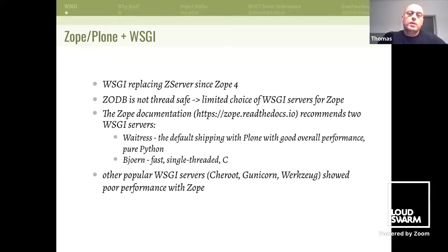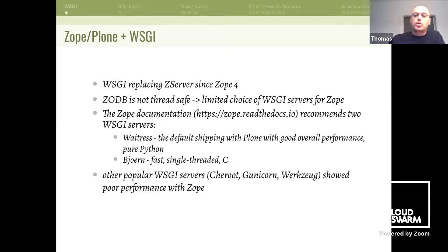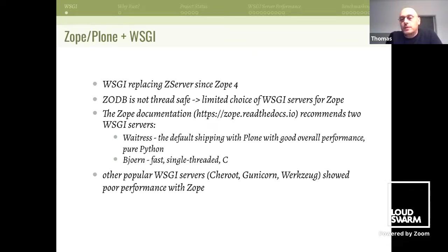Since the ZODB is not thread-safe, it turned out that there is actually a very limited choice of WSGI servers that can be used with Zope. The Zope documentation actually recommends only two WSGI servers: Waitress, which is the default and ships with Plone, implemented in pure Python with good overall performance; and Puren, which is a fast single-threaded server written in C.